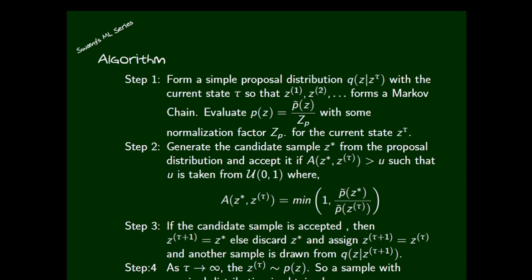Now let me move on to the formal algorithm. It contains several steps. Step one: form a simple proposal distribution q(z | τ), where τ represents the current state. Up to this current state τ, we develop a proposal distribution — that is, up to the existing situation we know what should characterize a good friend. So z₁, z₂, ... z∞ — different different states form a Markov chain.